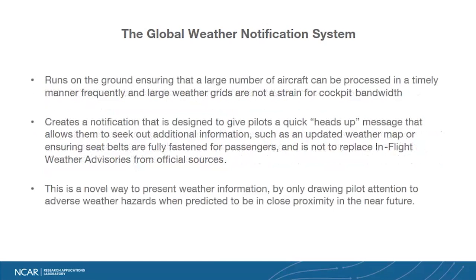The system does not run in the cockpit — it runs on the ground. One of the biggest reasons for running it on the ground is we can process all the aircraft that we want. We may not be able to send that message to all aircraft, the pilot may not want that message, but we can process them all. The notification message is a simple text message, really. It's designed to give the pilot a heads-up. It's not designed to give them the whole weather picture or tell them all the information they need, but it's designed to at least let them know that it's there. This allows the pilot to do what they normally do, which is seek out the information via their normal channels.